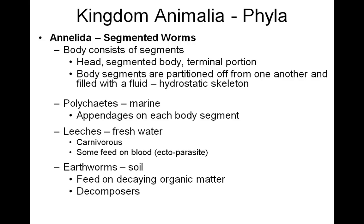Here are the annelids, my segmented worms. The body consists of segments — a head, the segmented body, and then ending in the terminal portion. Body segments are partitioned off from one another and filled with fluid, so therefore they have what is called a hydrostatic skeleton. My polychaetes are marine — they have appendages on each body segment and sometimes they act as respiratory systems. My leeches are freshwater, they're carnivorous, and they feed on blood, so they're considered ectoparasites.